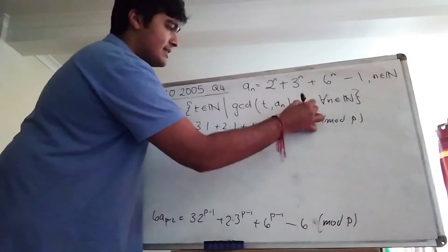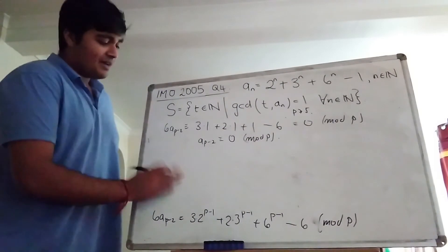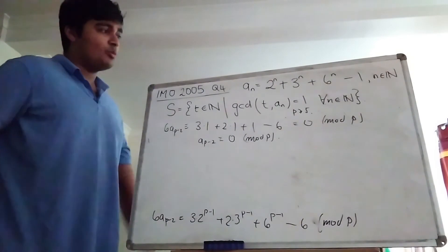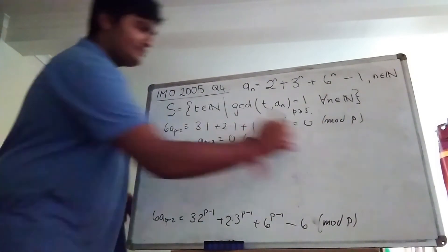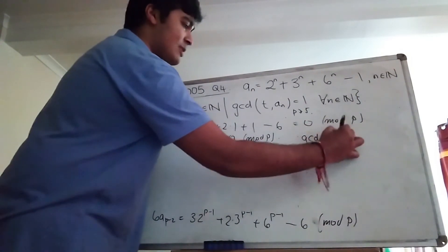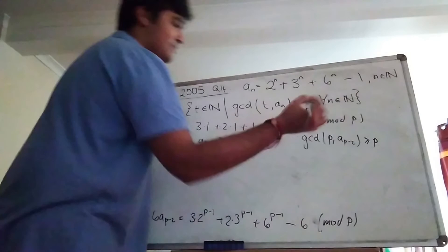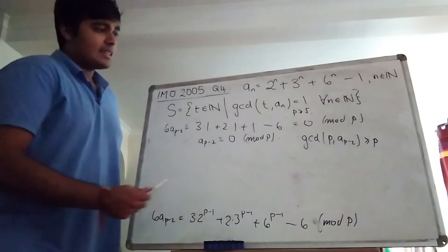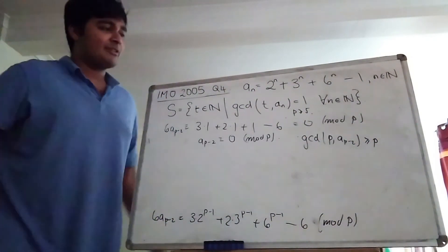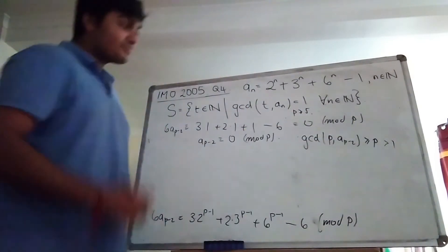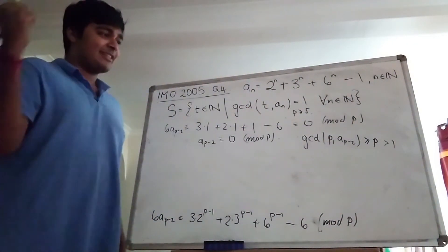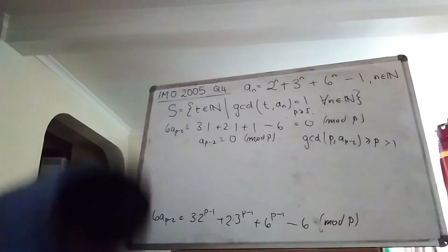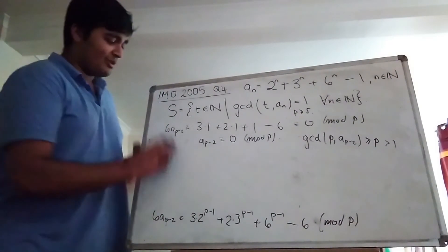Because six and p are co-prime — p and six share no common factors apart from one — I can divide both sides by six, and thus conclude that aₚ₋₂ is congruent to zero mod p. This is for p greater than or equal to five. So if p is a prime number greater than or equal to five, then aₚ₋₂ is congruent to zero mod p, and thus the GCD of p and aₚ₋₂ is at least p, which is certainly bigger than one. So we've shown that if p is a prime bigger than or equal to five, then p is not in S. It remains to show that two and three are not in S.